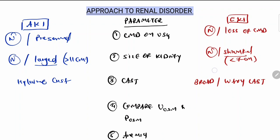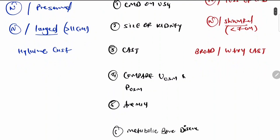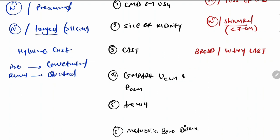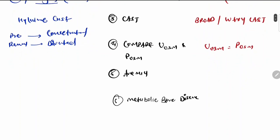Urine osmolarity depends upon the cause in acute kidney injury. In pre-renal cause there is concentrated urine, and in renal cause there is diluted urine. In chronic kidney disease, urine osmolarity equals plasma osmolarity. In AKI, anemia is not seen and metabolic acidosis is not seen, whereas in CKD anemia is common and metabolic bone disease is present.